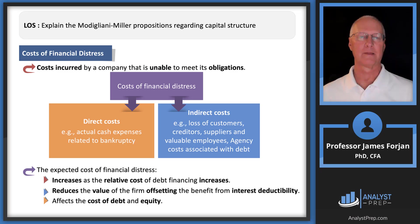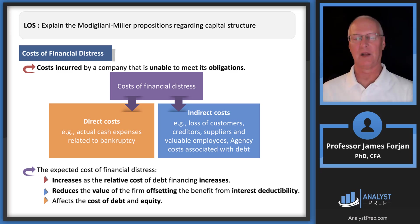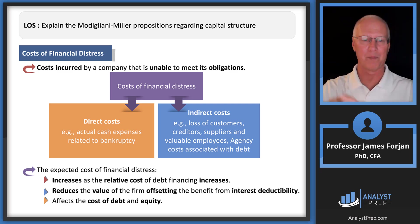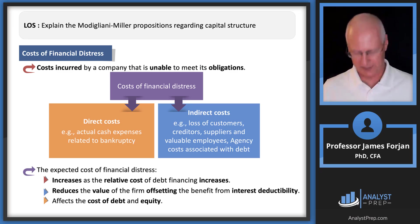Now let's go ahead and relax one more M&M assumption. We let the taxes come in — now let's throw away the assumption that said there are no financial distress or bankruptcy costs. What this does is throw a whole bunch of stuff into the M&M world, which was originally this big, then grew with taxes, and now — when we allow financial distress costs to enter the model — we're really approaching reality.